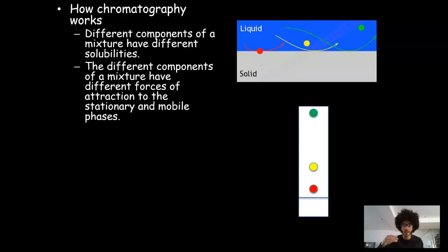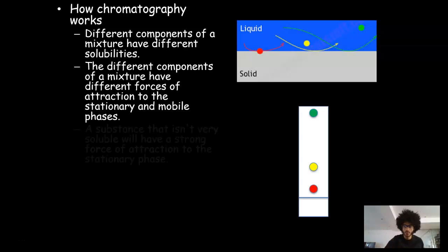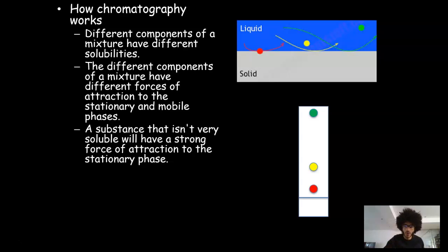In contrast, let's have a look at red. Now, red is way down at the bottom, quite close to where the pencil line was. That must mean it's not very soluble because it didn't dissolve a great deal in the water to travel up through the mobile phase. And then the yellow is kind of in between. So, as I just mentioned, a substance that isn't very soluble will have a strong force of attraction to the stationary phase. In this particular case, the one that's not very soluble is the red one. So it's got a very strong force of attraction to the stationary phase and a weak force of attraction to the mobile phase.